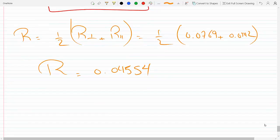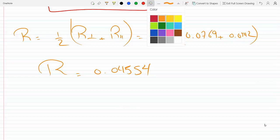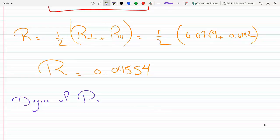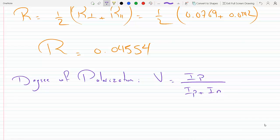Now we want to get to the degree of polarization, denoted by V. V equals Iₚ/(Iₚ + Iₙ), where Iₚ and Iₙ are the constituent flux densities of polarized and unpolarized light. The polarized component has to equal both R⊥ plus R‖.